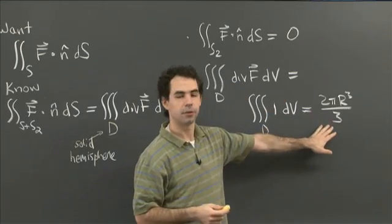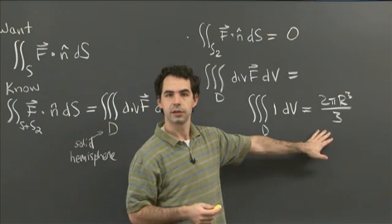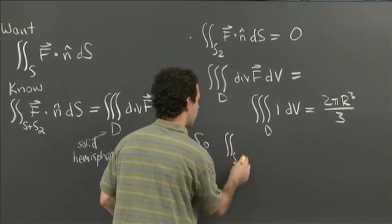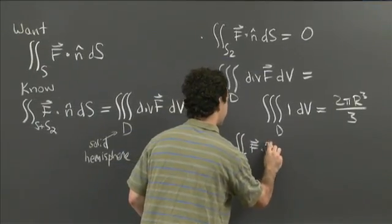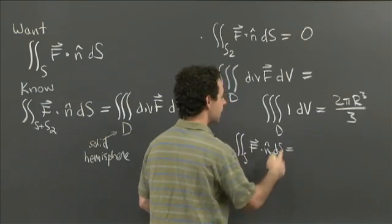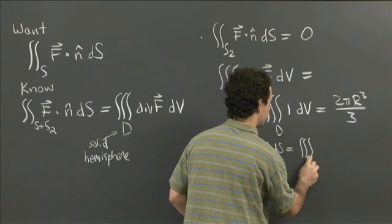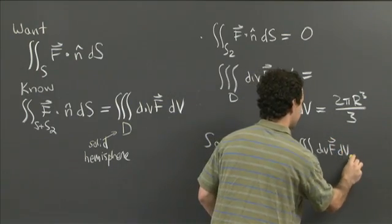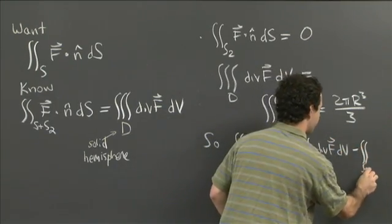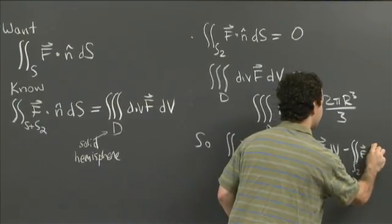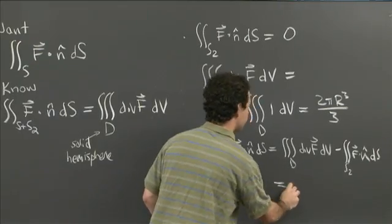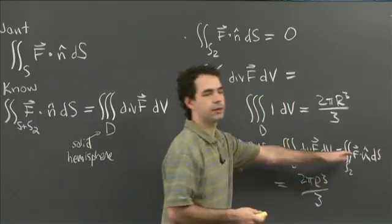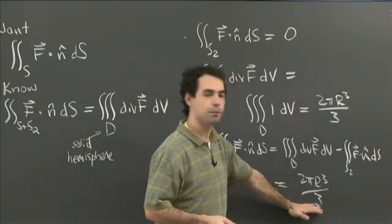So our integral — the integral over S of F dot n̂ with respect to surface area — equals the triple integral over D of div F dV minus the double integral over S2 of F dot n̂ dS. That gives us 2πr³/3 minus 0, which is just 2πr³/3.